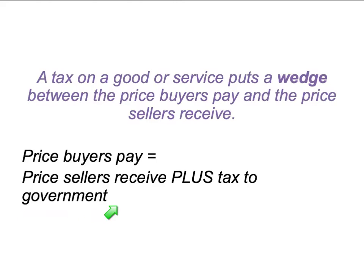When the buyer paid eleven dollars, that was divided between one dollar to the government plus ten dollars as the price the seller receives. We sometimes say that a tax on a good or a service puts a wedge or a gap between the price the buyer pays and the price the seller receives.